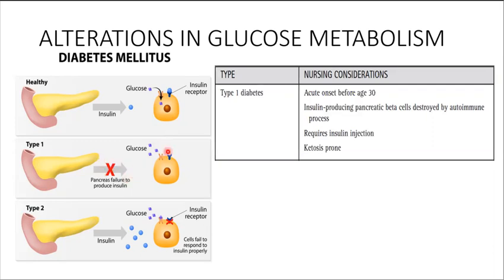The pancreas fails to produce insulin, so there's no insulin to transport the glucose into the cells. So these individuals will require insulin injection.